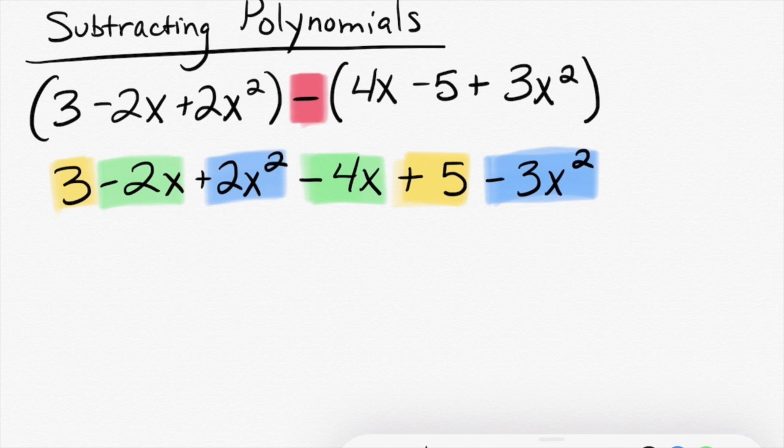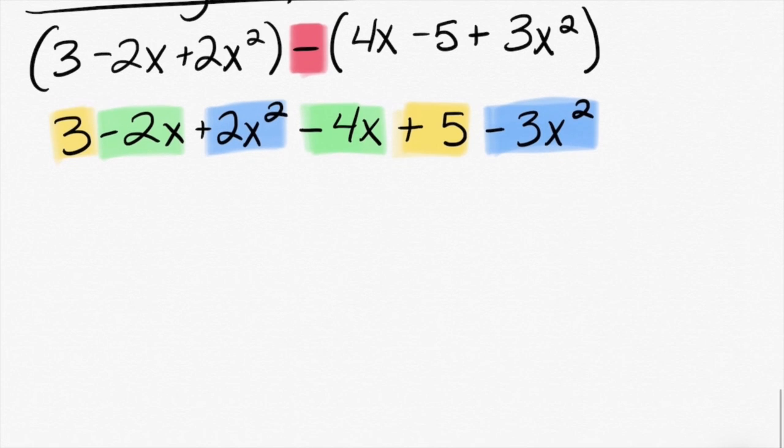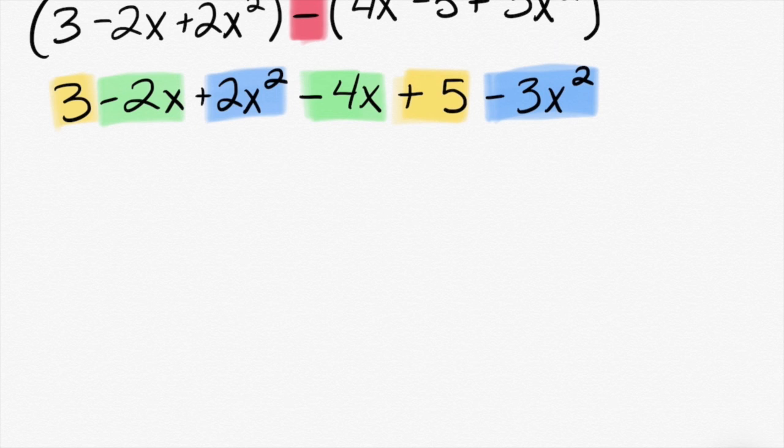So Catherine, when I combine the x squareds, I'm picking on you because it's 2 minus 3. When I combine them, what do I get? There we go. Now I can write negative 1x squared or just negative x squared.